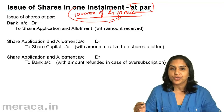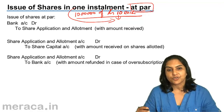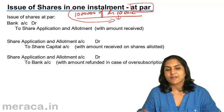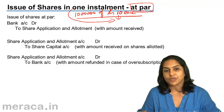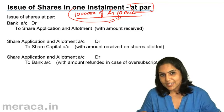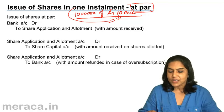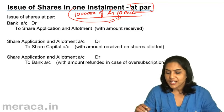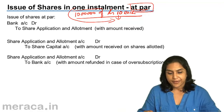If shares are issued at a lower value, it is said to be issued at a discount. If issued at a value higher than the face value or the nominal value, it is said to be issued at a premium. We are now discussing issue of shares in one installment and at par.